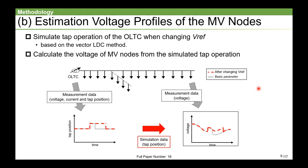Next, I will explain step B in detail. In this step, we first simulate the tap behavior when Vref is changed based on the vector LDC method using measurement data of OLTC. When the simulated tap position is different from the measurement one, like this time, the voltage at MV node is calculated by adding or subtracting the tap width as shown in this figure.